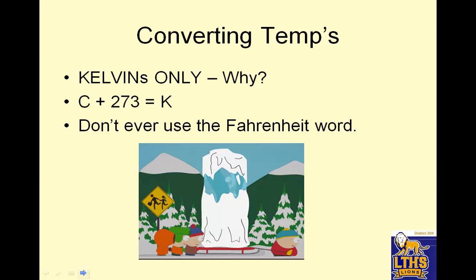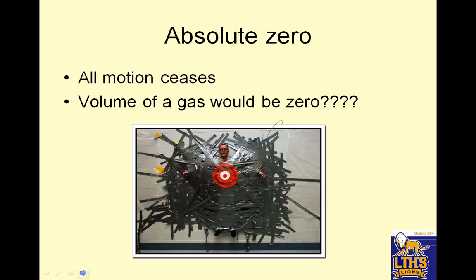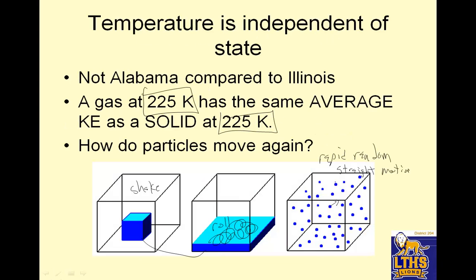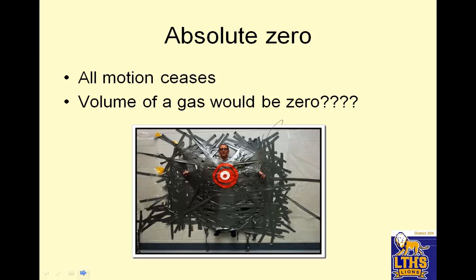Converting temperature: we only use Kelvins. Celsius plus 273 equals Kelvin — don't ever use Fahrenheit. All you need to know is Celsius plus 273 equals Kelvin, and vice versa. Absolute zero is where all motion ceases, so the volume of a gas would be zero. If particles weren't moving, they'd all collapse into each other. We have never reached absolute zero — it is a theoretical number.